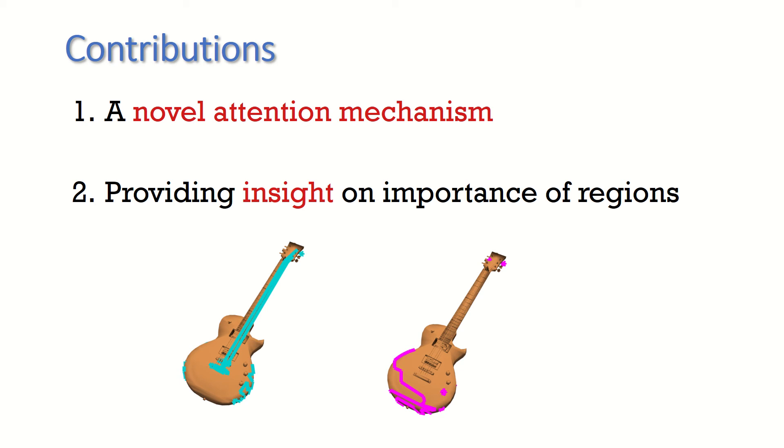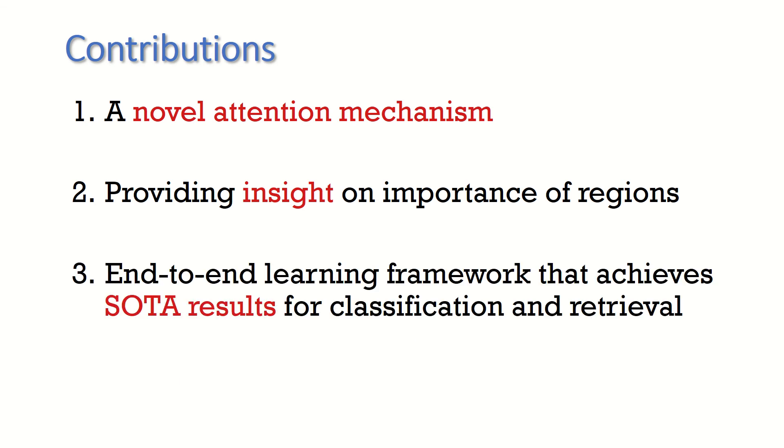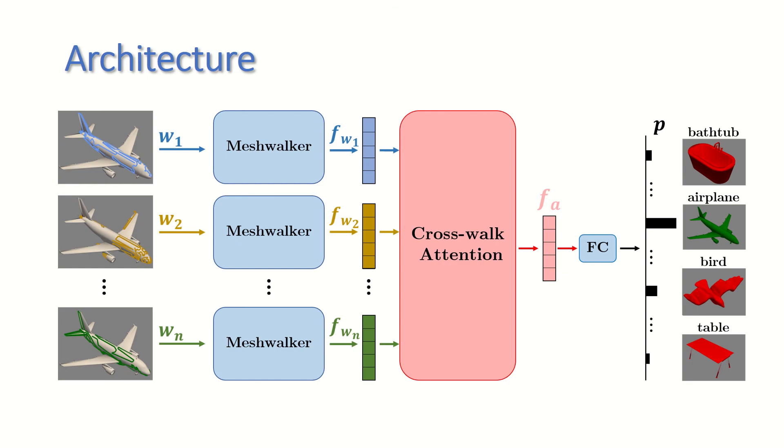In contrast, the magenta walk is the least attentive walk, as it cannot distinguish the guitar from other objects. Finally, we present an end-to-end learning framework that realizes this attention.